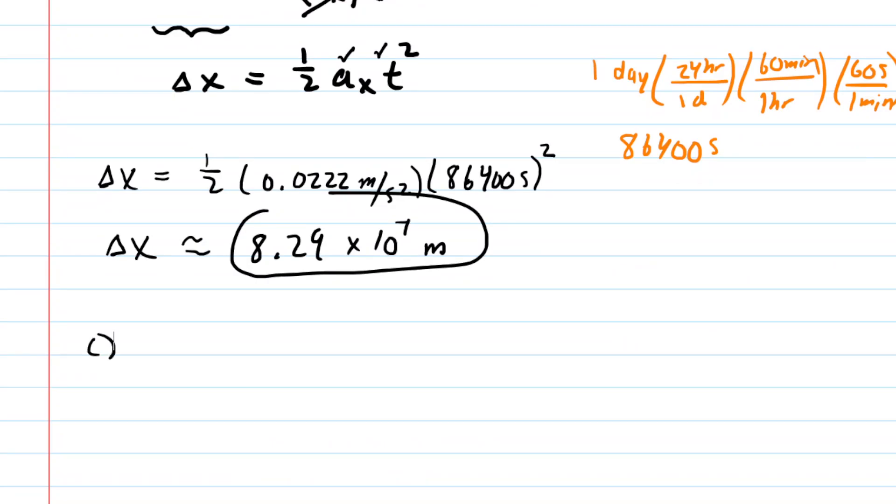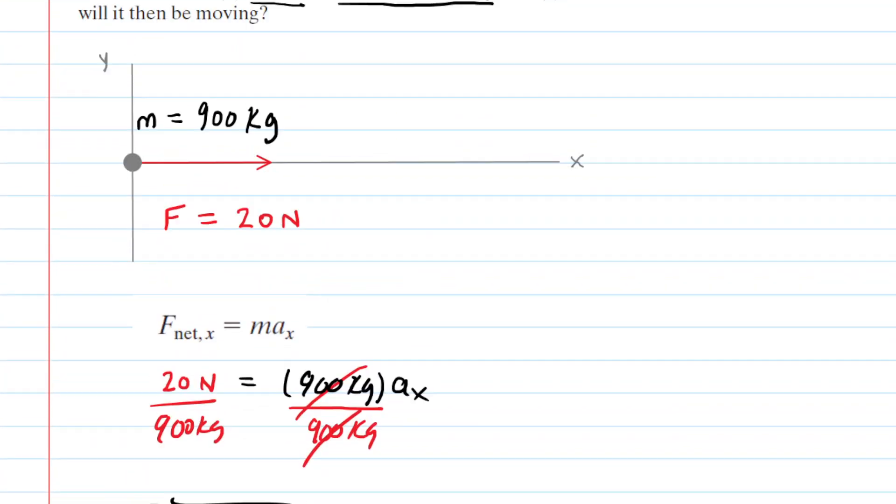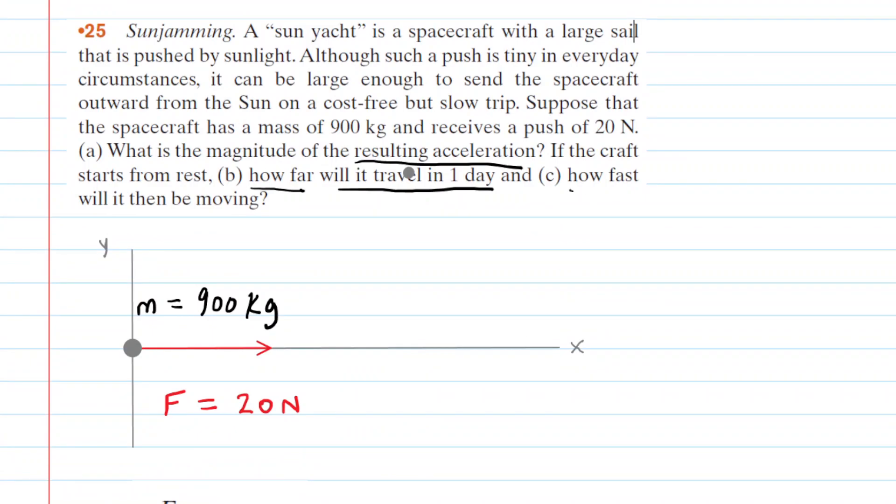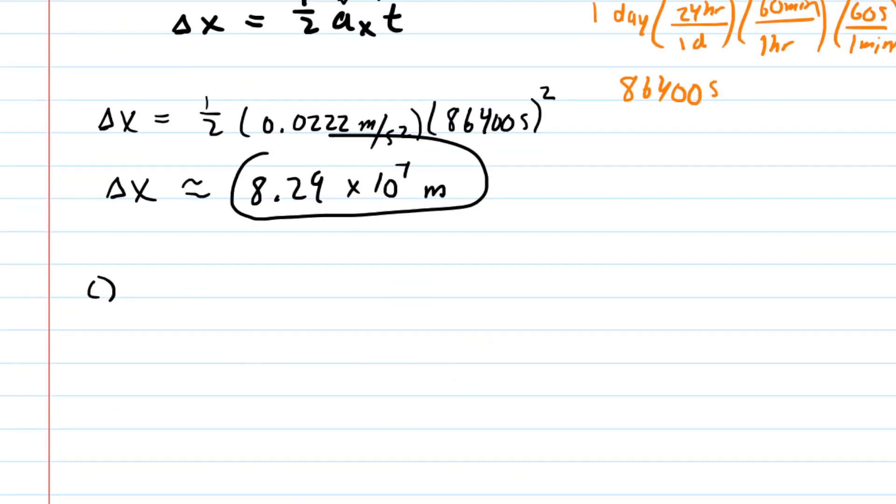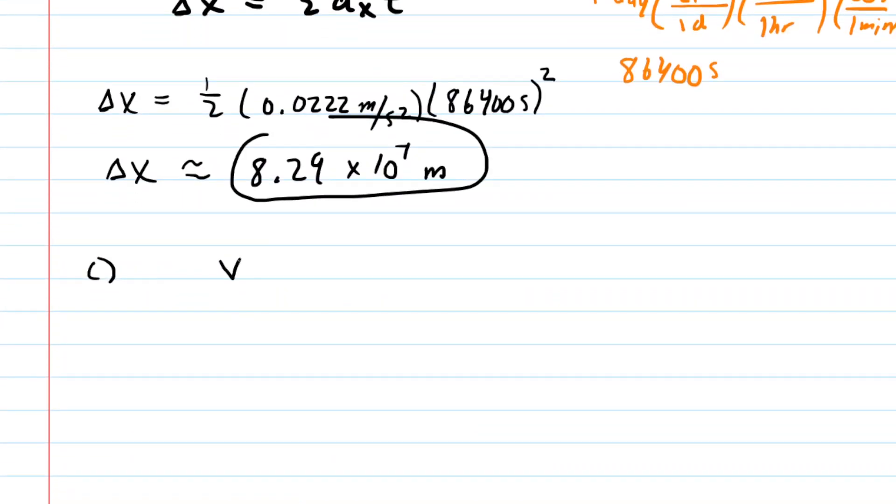In Part C we need to calculate how fast the spacecraft will be moving, so its final velocity. It starts from rest, meaning the initial velocity equals 0 meters per second. We know the acceleration in the X direction and the time.